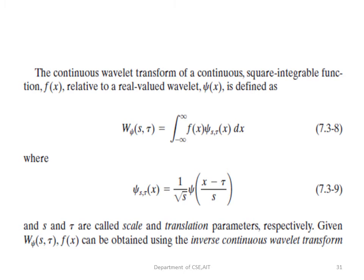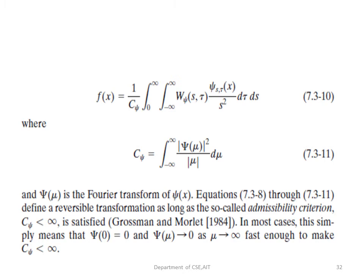The continuous wavelet transform W_ψ(s,t) is given as: W_ψ(s,t) = ∫ f(x) ψ*(x) dx, where ψ(s,t,x) = (1/√s) ψ((x−t)/s), and s and t are the scaling and translation parameters. Given W_ψ, f(x) can be recovered by the inverse CWT: f(x) = (1/C_ψ) W_ψ, where C_ψ = ∫ |Ψ(μ)|² / μ dμ and Ψ(μ) is the Fourier transform of ψ(x).